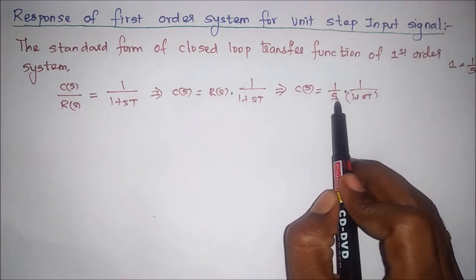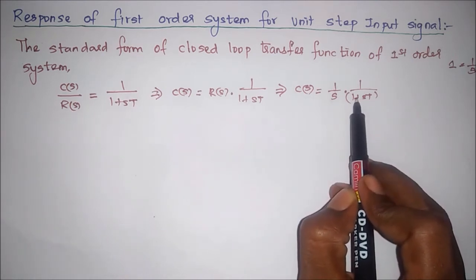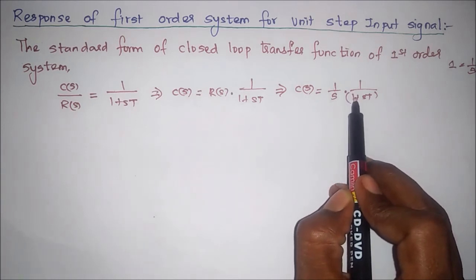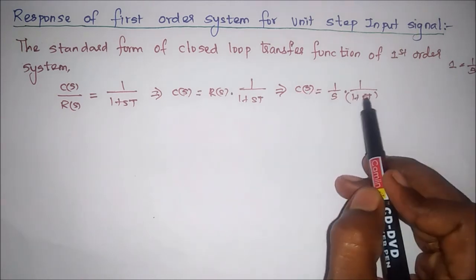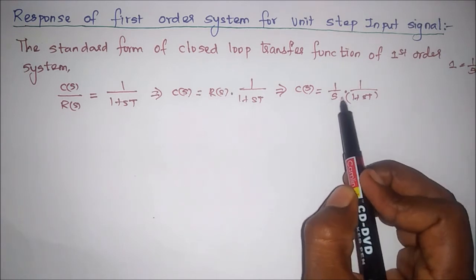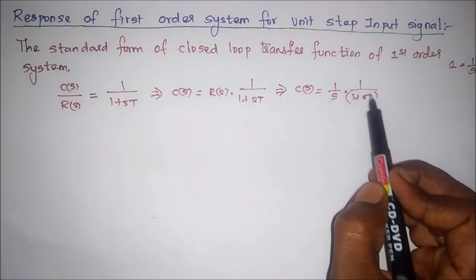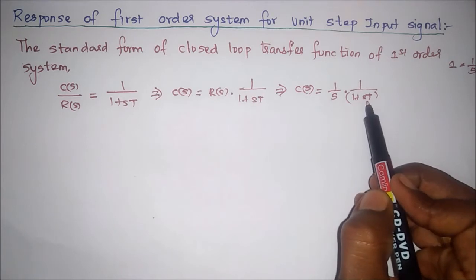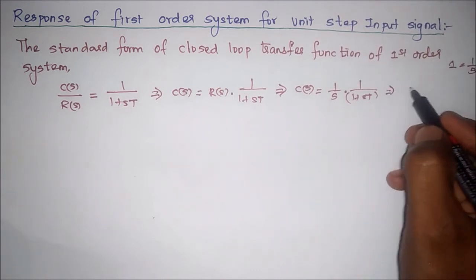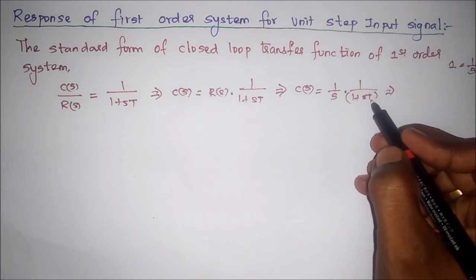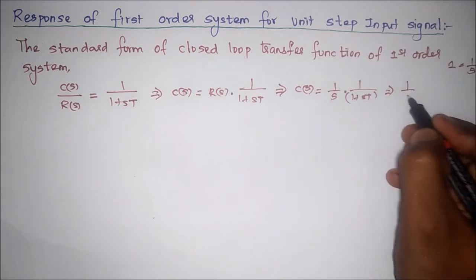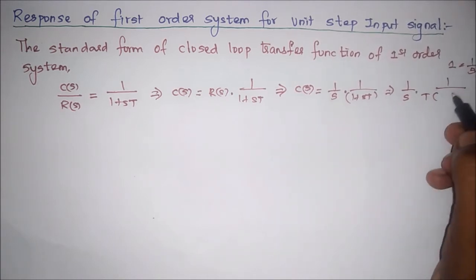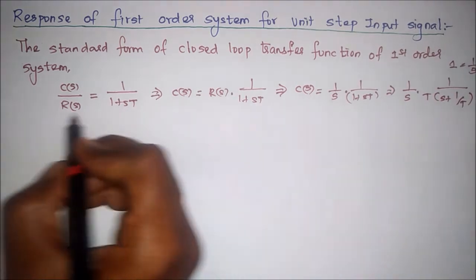This is the response but it is in the s-domain, so we have to convert it to the time domain. First we have to rearrange it into standard form to take the Laplace inverse transform to get C(t). We have to arrange the denominator as an s plus term, so we take the coefficient of s, which is T, outside. We get 1 by s into T into (s plus 1 by T).